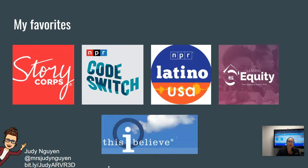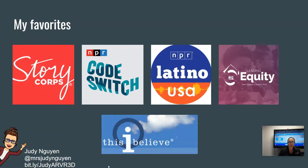StoryCorps is one I really like — it's an initiative to record as many stories as possible. I believe it's archived in the Library of Congress. They had a van and would go place to place to record stories, and they have an app so families can record stories through social distancing. I would assign my students to record an interview with a grandparent or somebody from an older generation and share it with the class. Code Switch is about race and racial identity — it's a really fun and serious podcast and I think they do it really well.